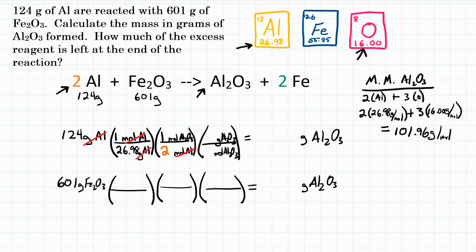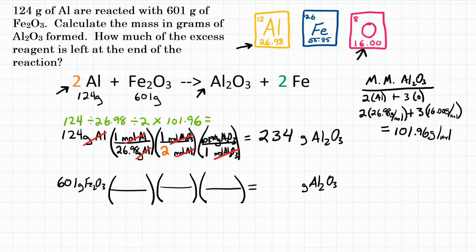So we put 101.96 grams of Al₂O₃ on top and one mole on the bottom. Moles of Al₂O₃ cancel and we have grams of Al₂O₃. Now the math: 124 divided by 26.98, divided by 2, multiplied by 101.96, equals approximately 234 grams. So if all 124 grams of aluminum react, we'd get 234 grams of Al₂O₃. But we need to solve the other problem to see if that result is less.